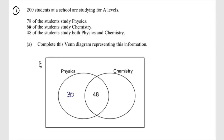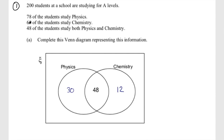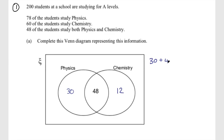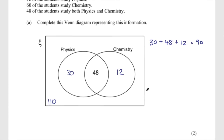I can do the same for chemistry. There are 60 students studying chemistry and 48 also study physics, leaving 12 who only study chemistry. So these two numbers add up to 60. Now I can work out how many students in total study physics and chemistry: 30 plus 48 plus 12 equals 90. I have 90 students in physics and chemistry. With 200 students in the universal set, 200 minus 90 gives me 110 students outside of these two sets. That's all the information needed: labels, numbers inside both sets, and the number outside.